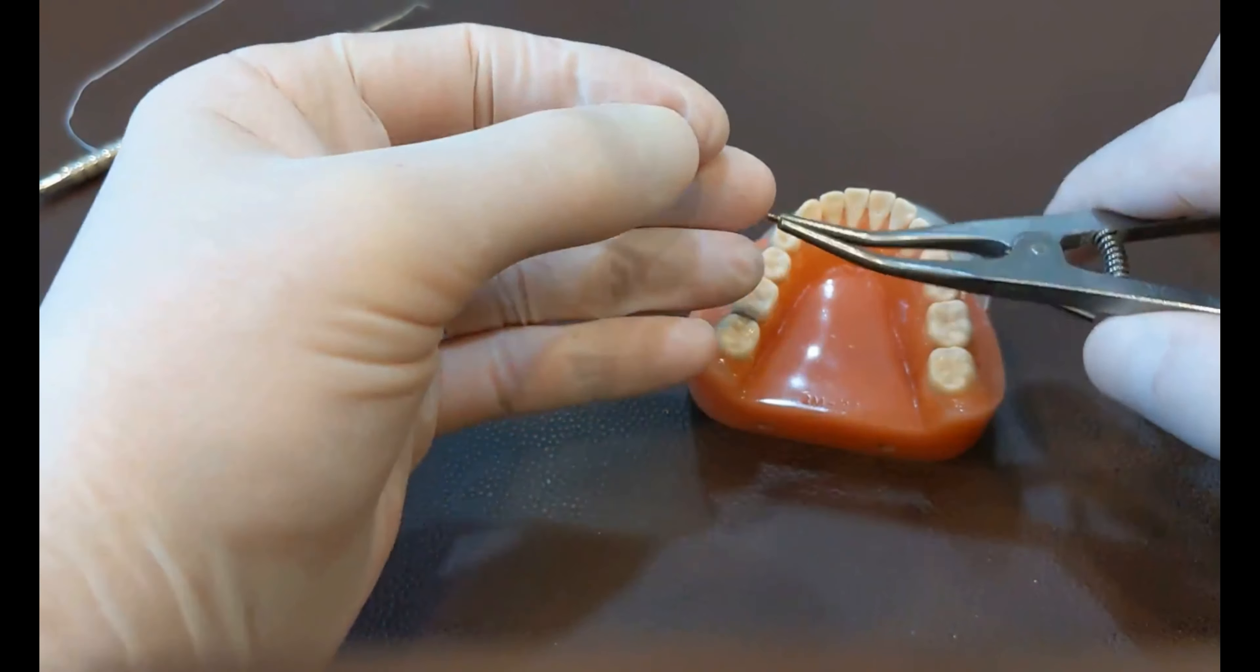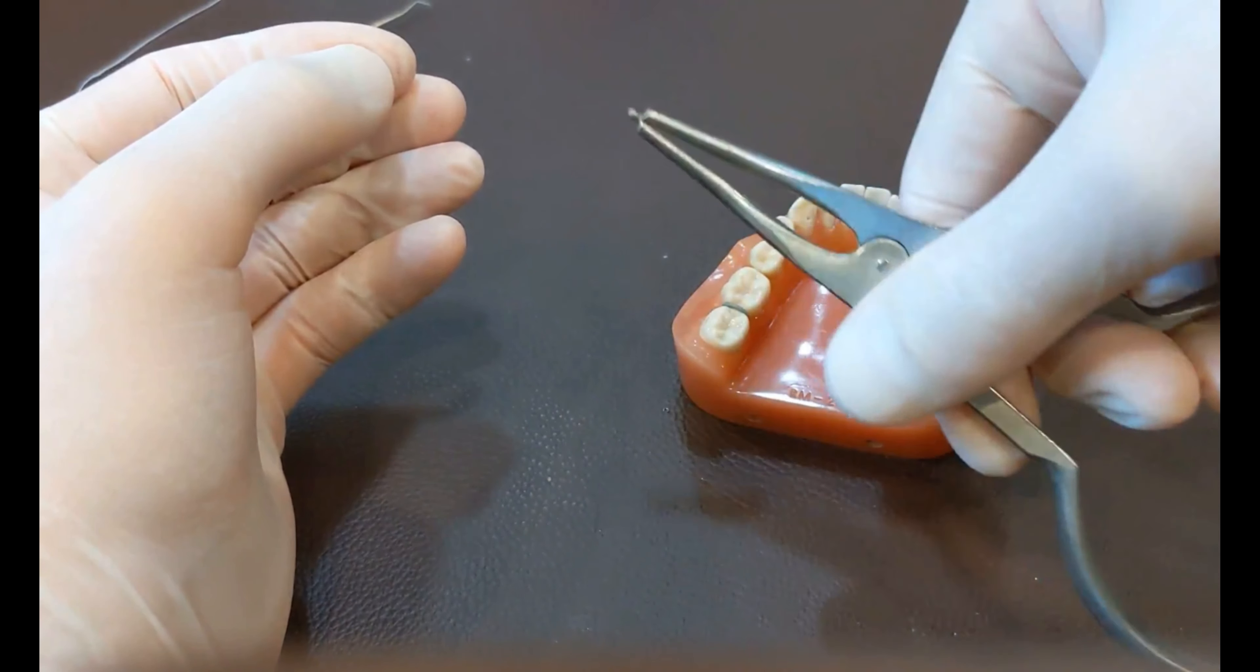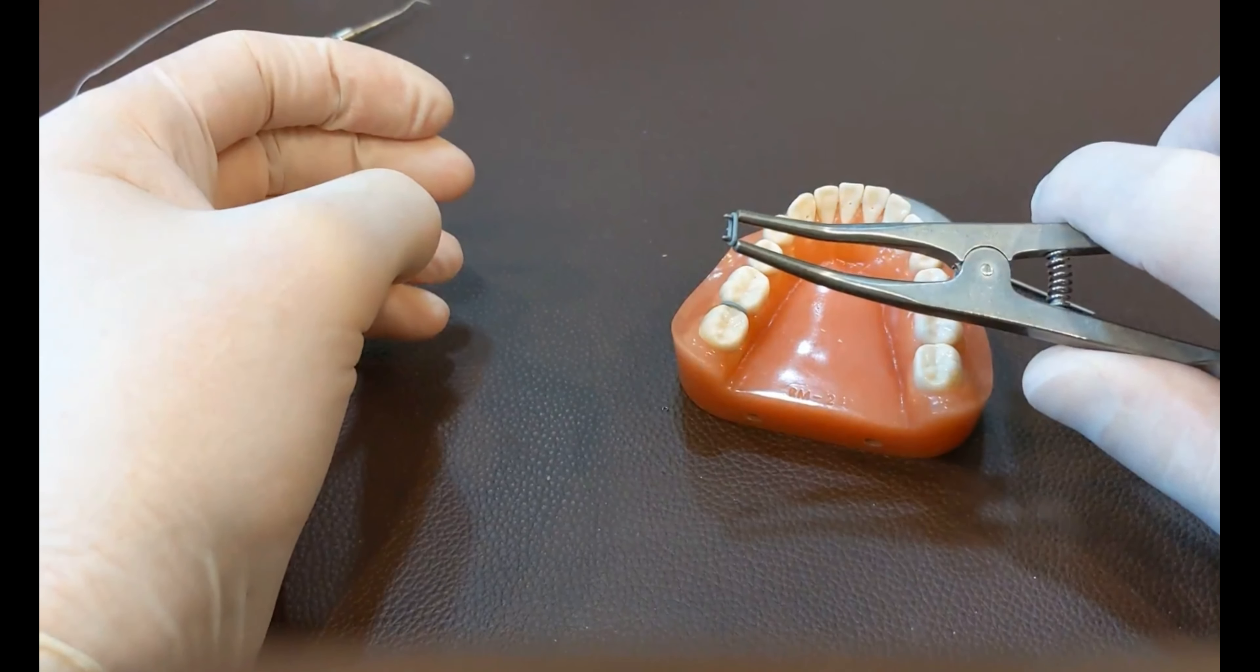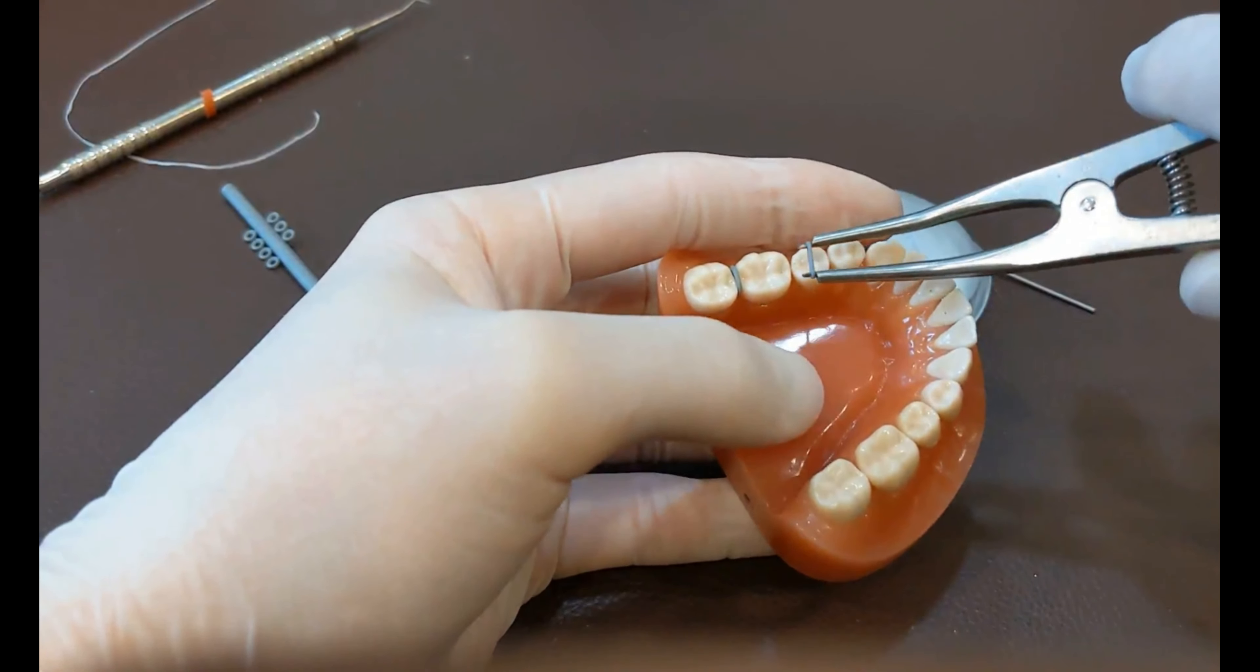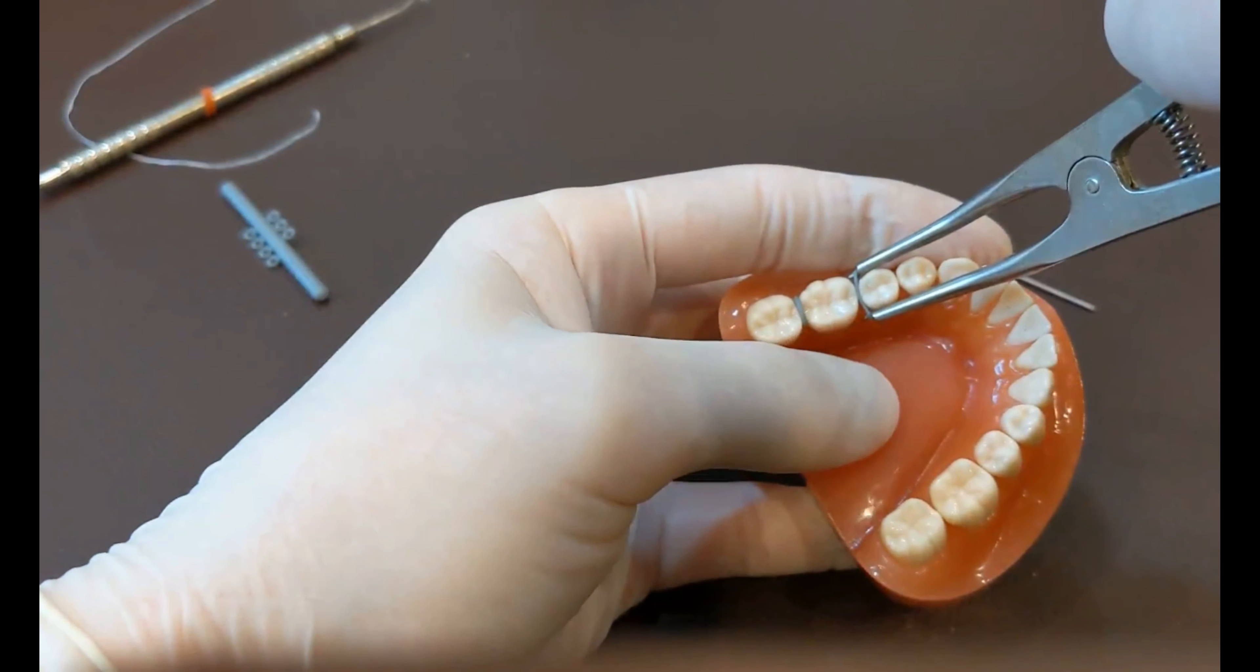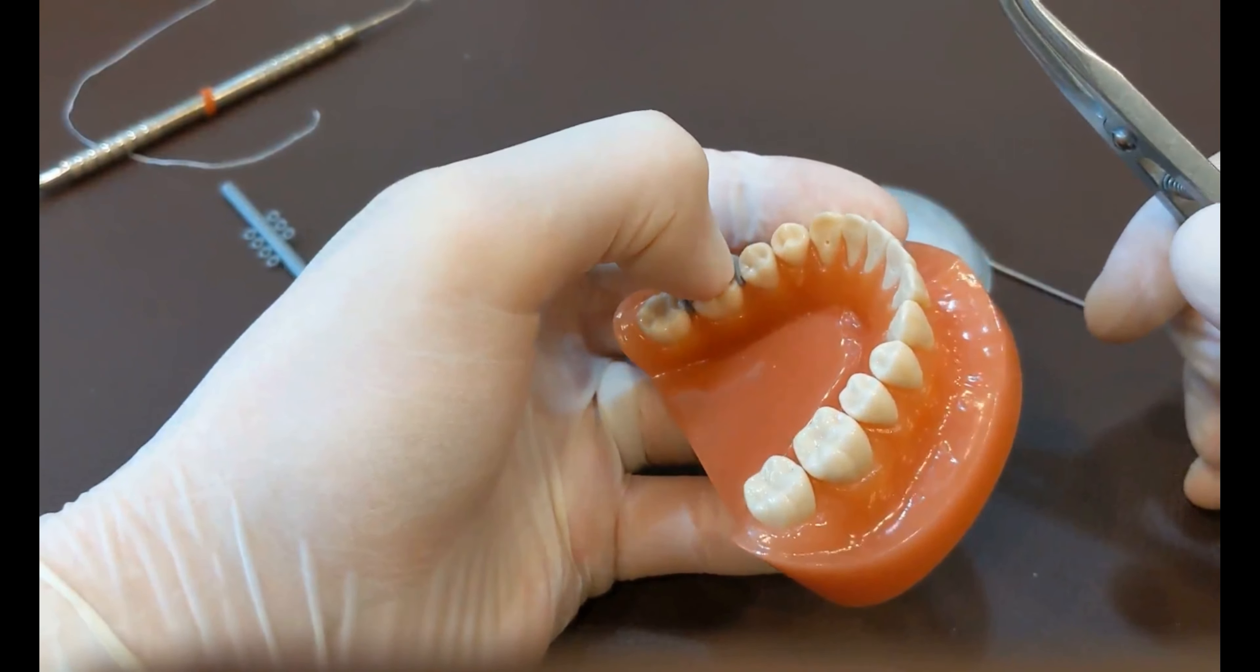The second way to place a separator is with separator pliers, which look like this. So what you do is you get your separator, you put it on here, and then as you gently squeeze, it opens it up a little bit. So the idea is, you get it in here, you open this up, and then you push down so that just half of the separator goes below the contact. And then you let go and make sure that it stays in there.